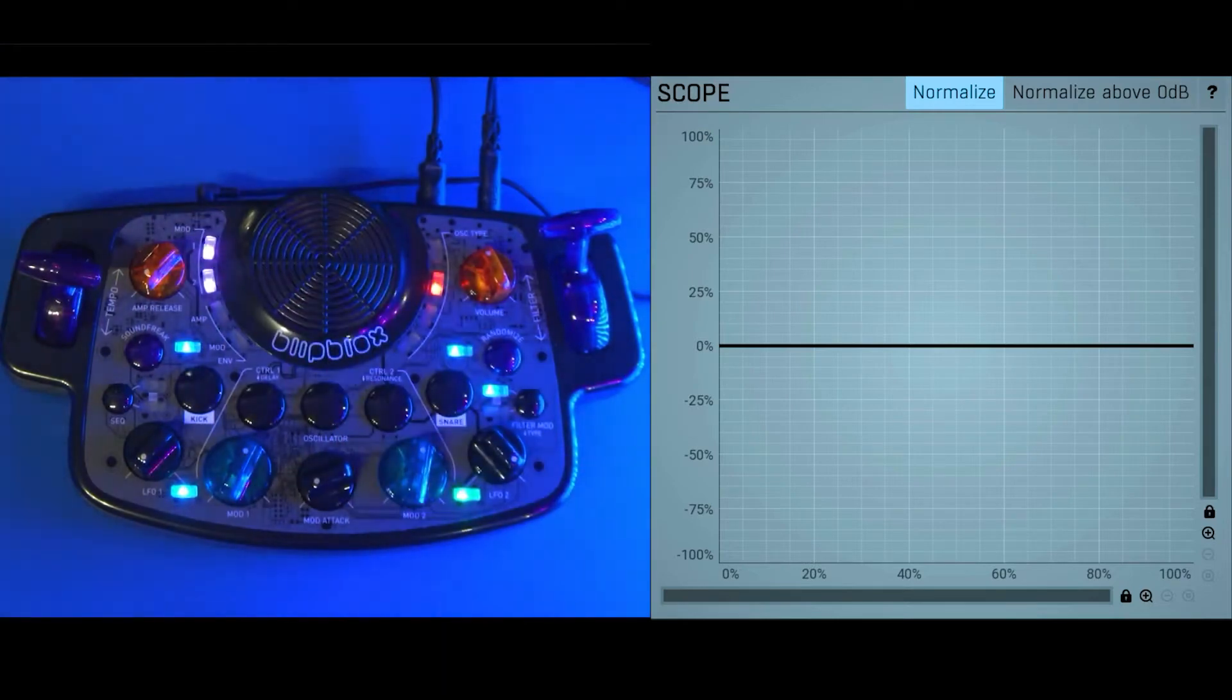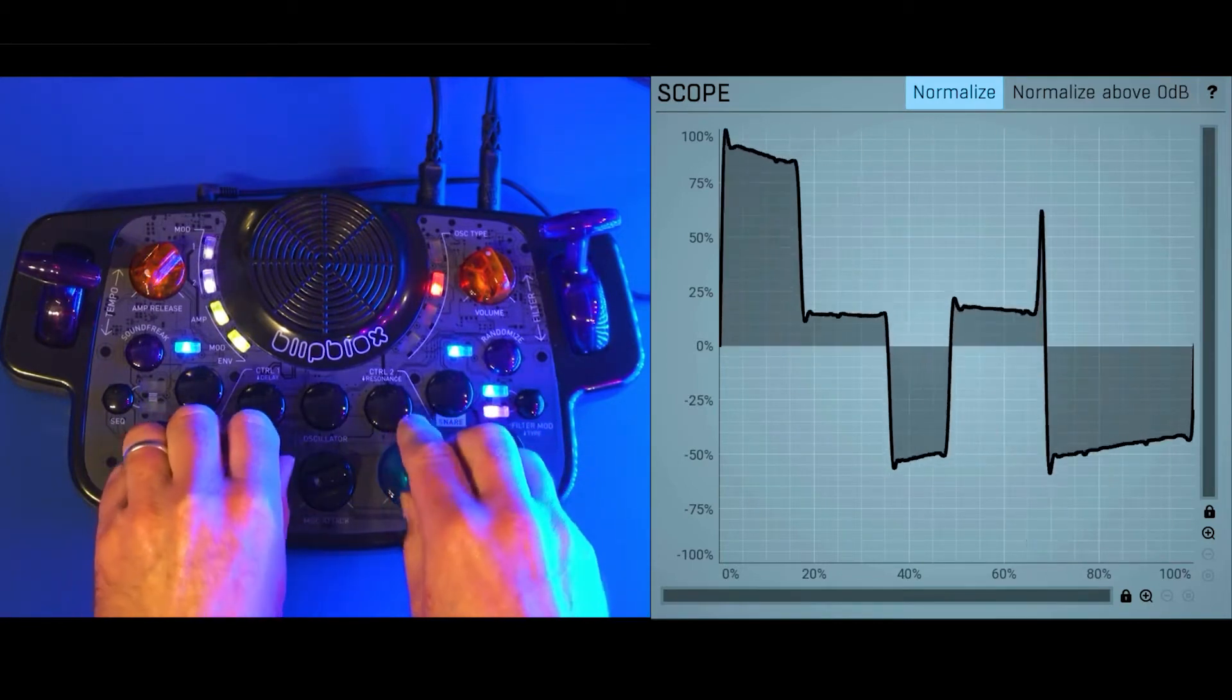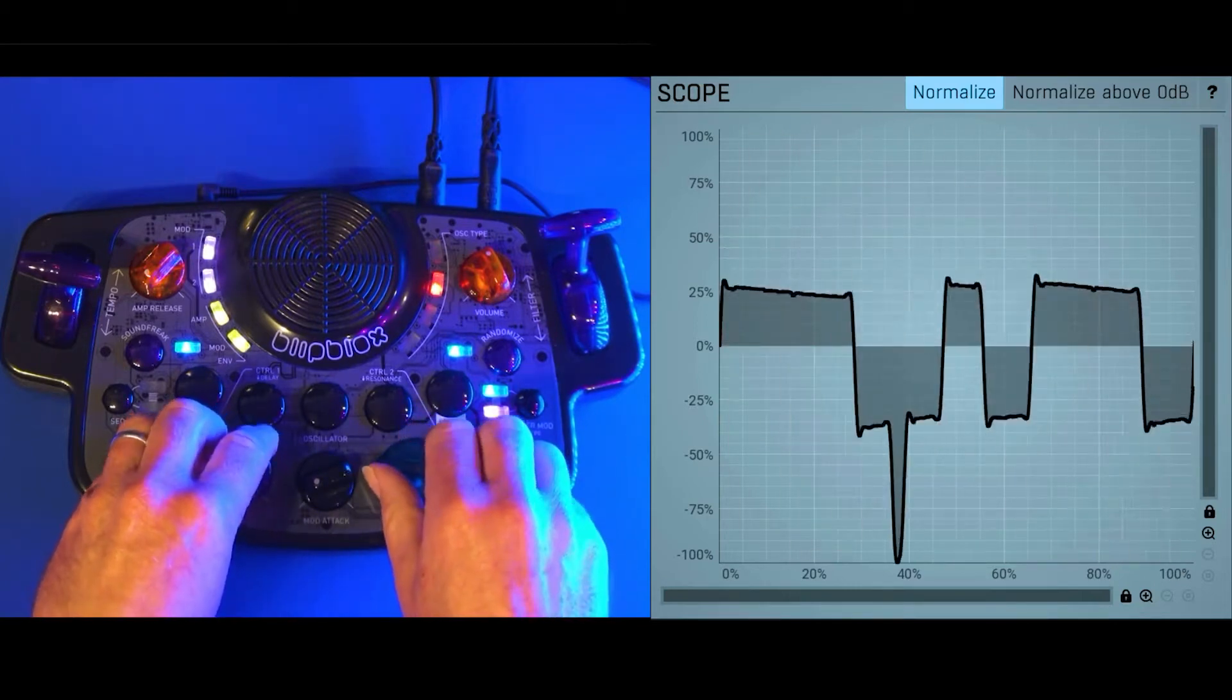We're going to talk a little bit about the oscillators on the Blip Blocks After Dark. This is sort of the hardest part of the sensor to explain, so we thought we'd do it today with the help of the oscilloscope. I want to thank Melda Productions for this free oscilloscope plugin. It's pretty fun if you want to play around with it.